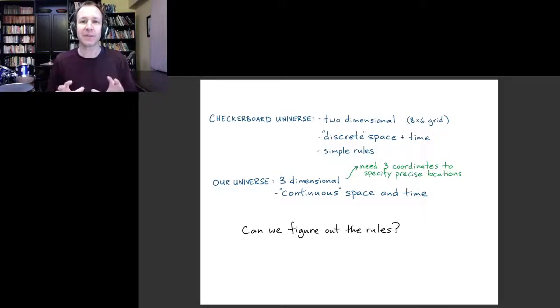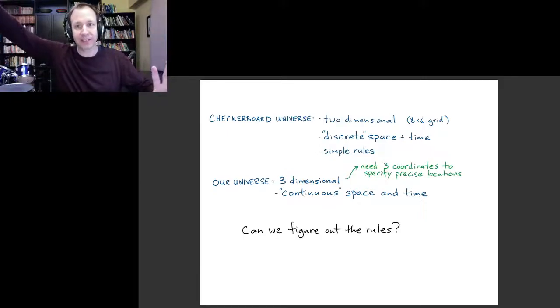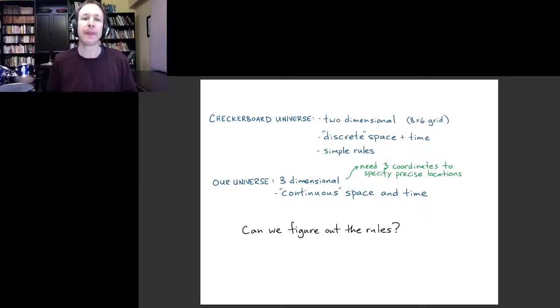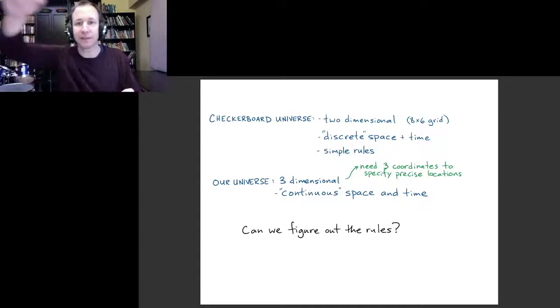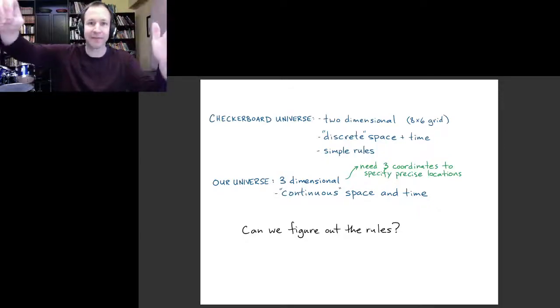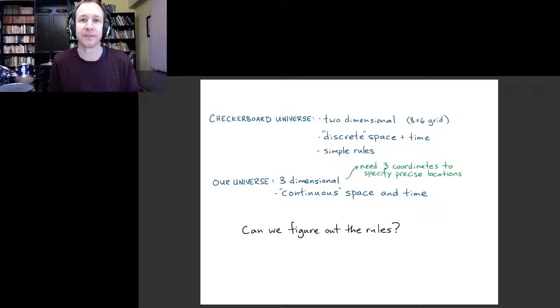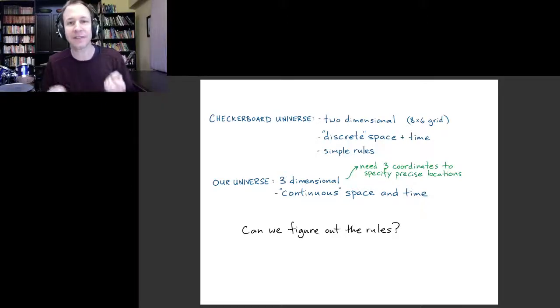The checkerboard universe was basically just a big grid of spaces that things could be. It was an eight by six grid and it was two dimensional. That means we can specify all of the locations by two numbers: how many squares are you from the left, and how many squares are you from the top. So it was a discrete space. We use the word discrete to indicate that there were, in this case, a finite number of specific positions.